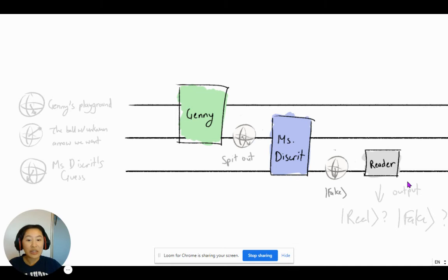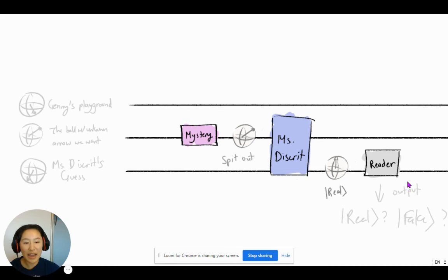And the answer is that Jennie will always win. And here's why. The only time this battle will ever end is when Mrs. Discrit cannot tell the difference anymore. And that will happen when the ball that Jennie spits out becomes equal to the mystery ball. When these two balls are equal, Mrs. Discrit cannot classify what is real and what is fake because they're the same. And at this point, this battle will end.